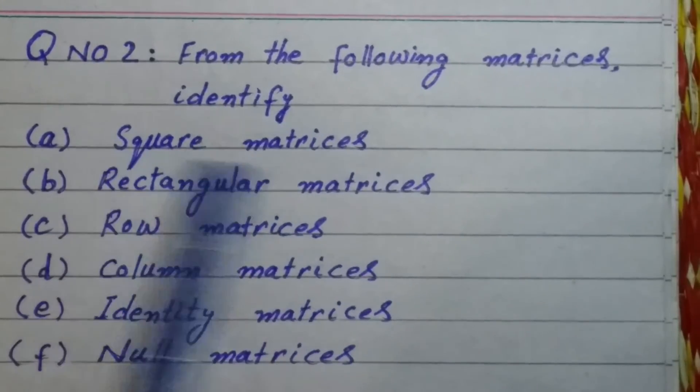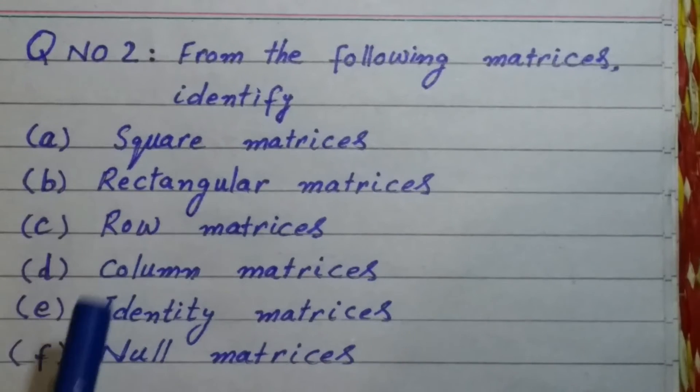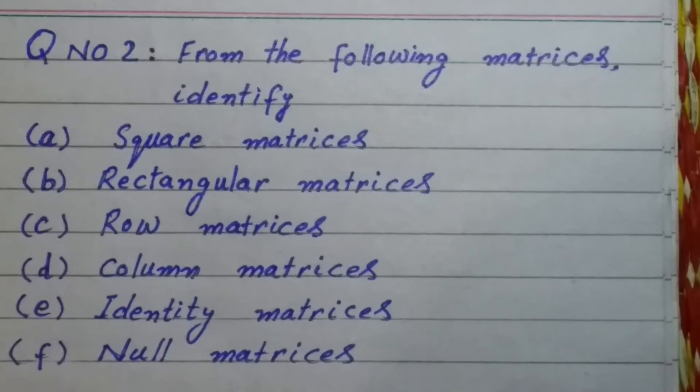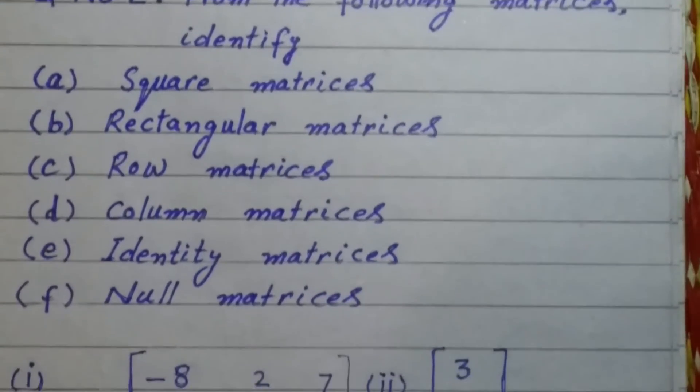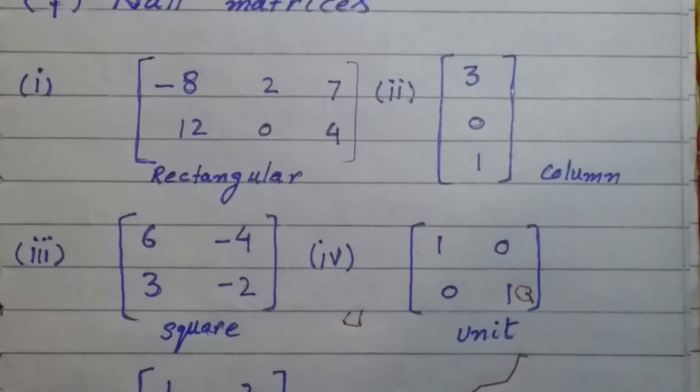From the following matrices identify square matrices, rectangular matrices, row matrices, column matrices, identity matrices and null matrices. So these are the matrices that we have.